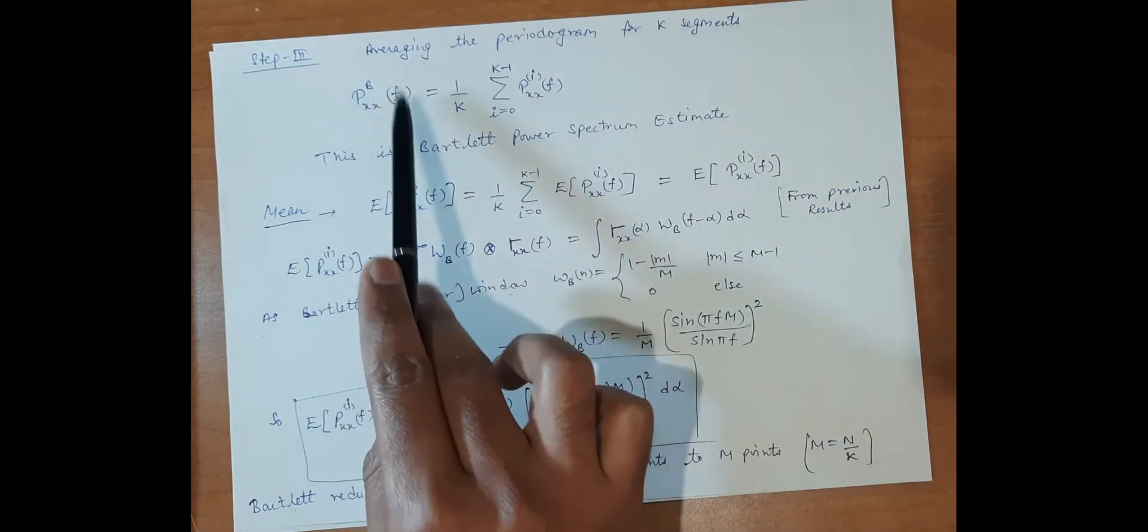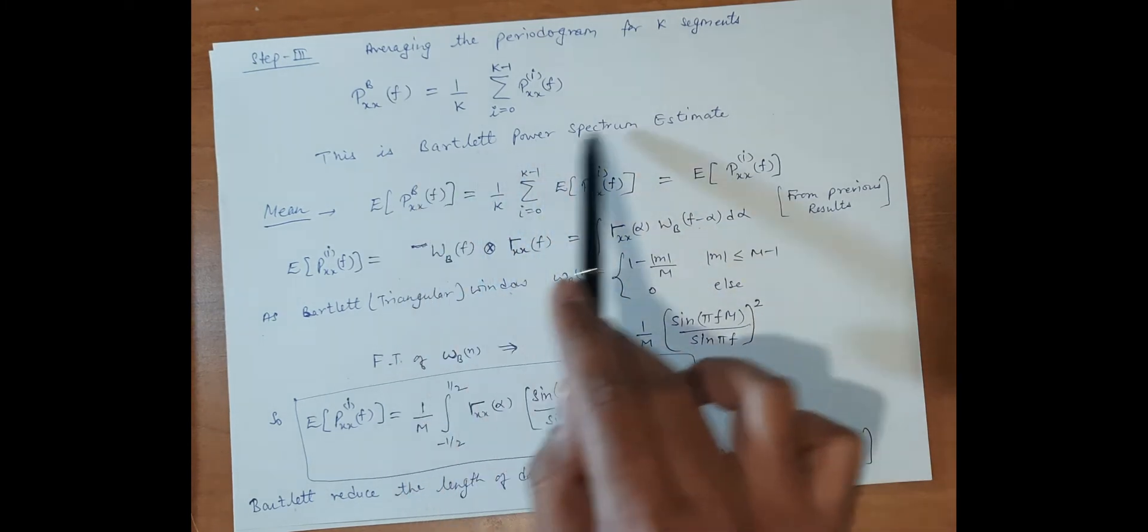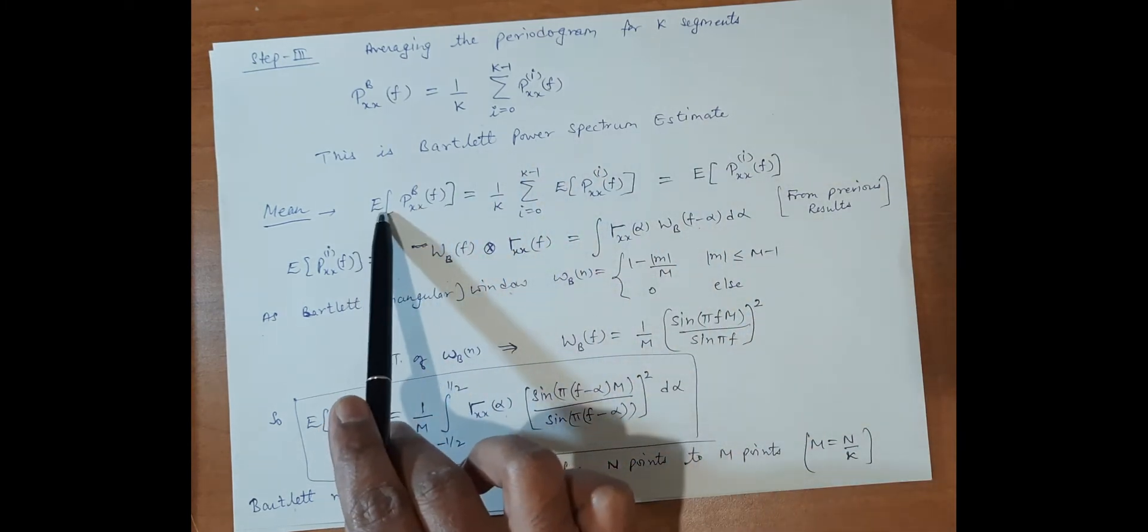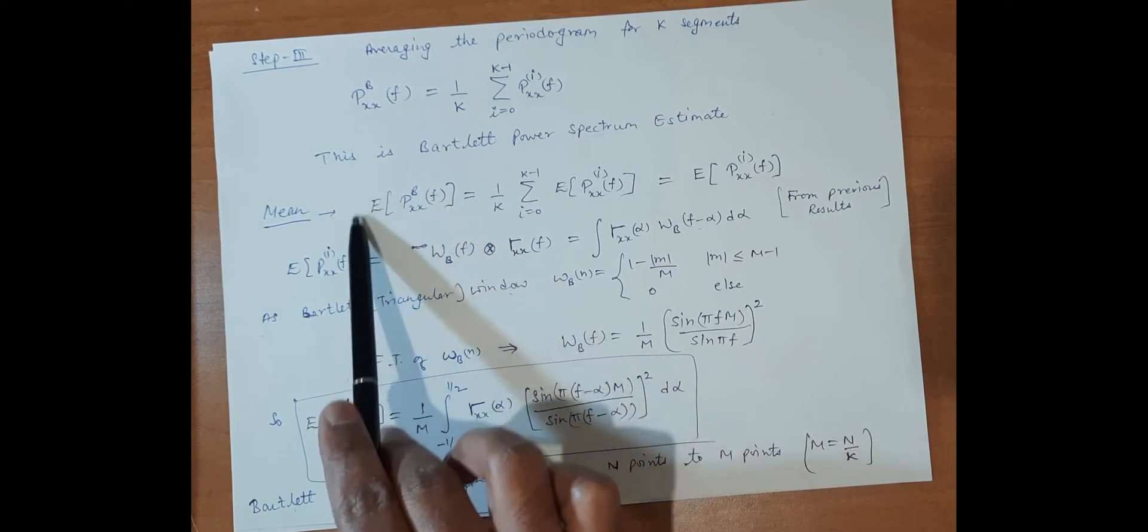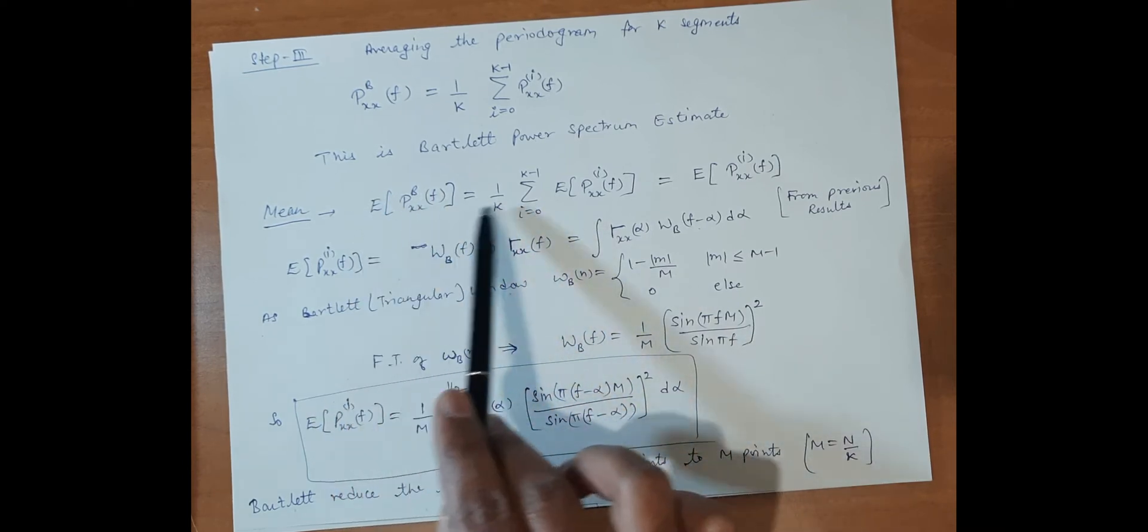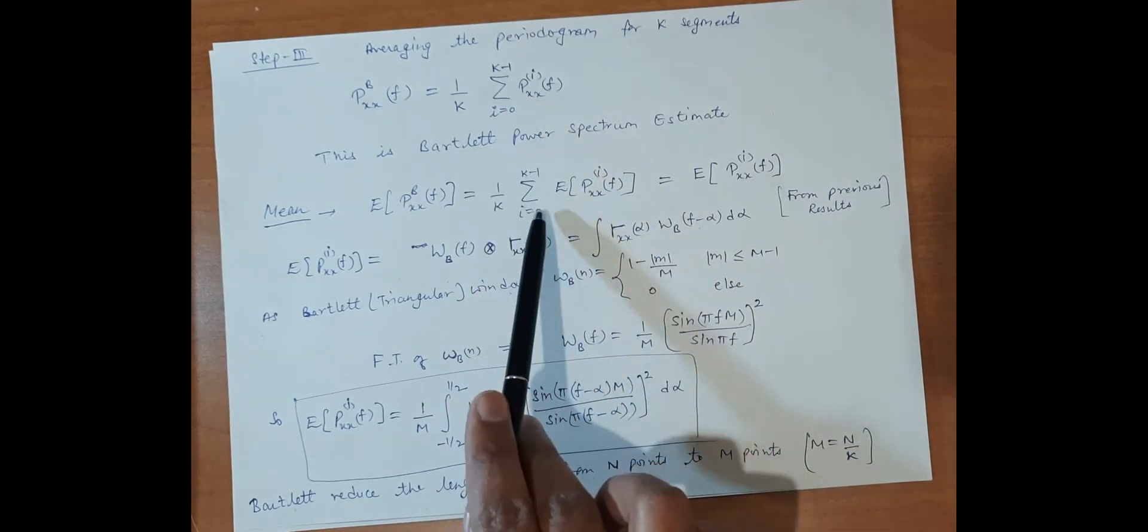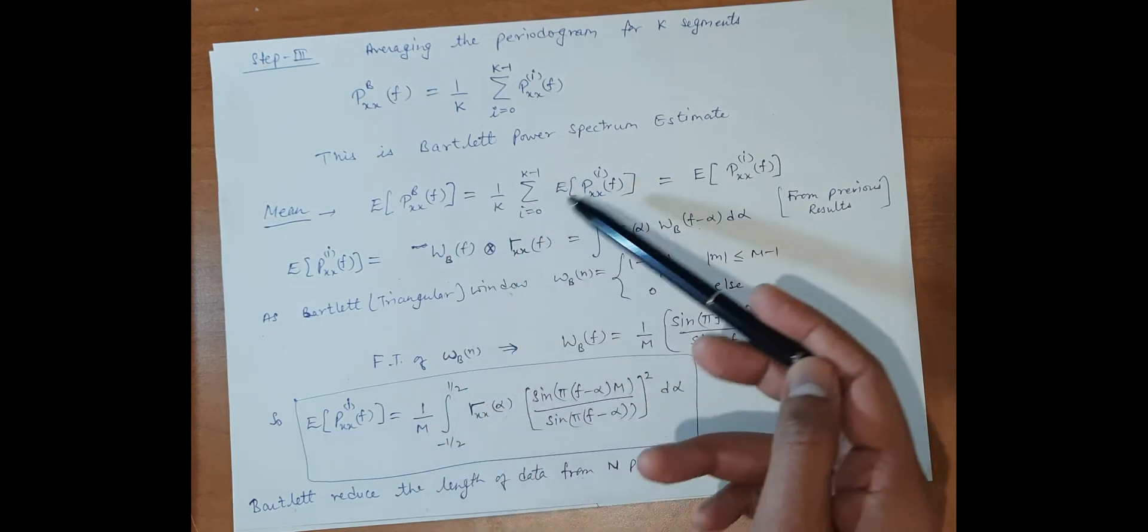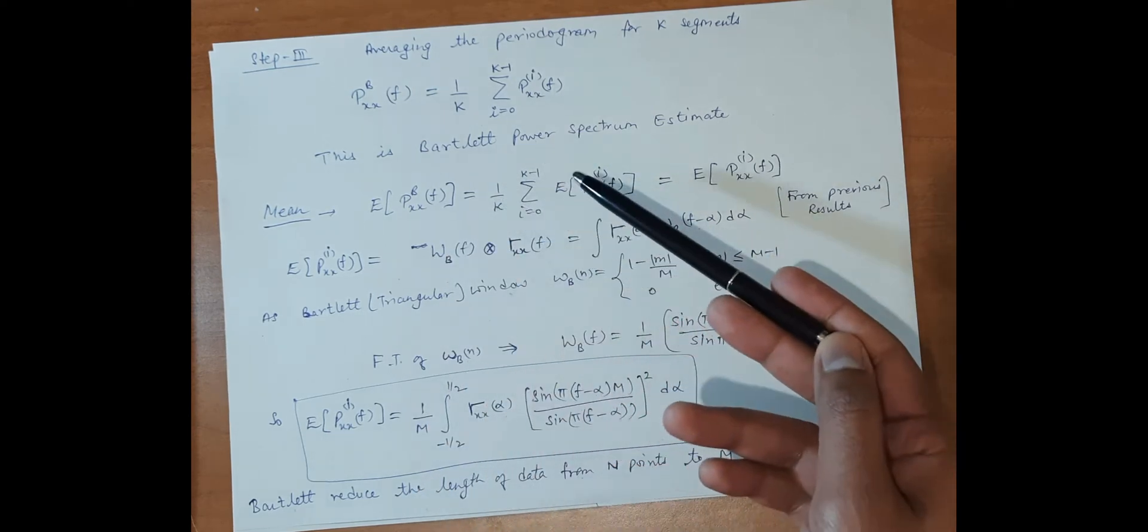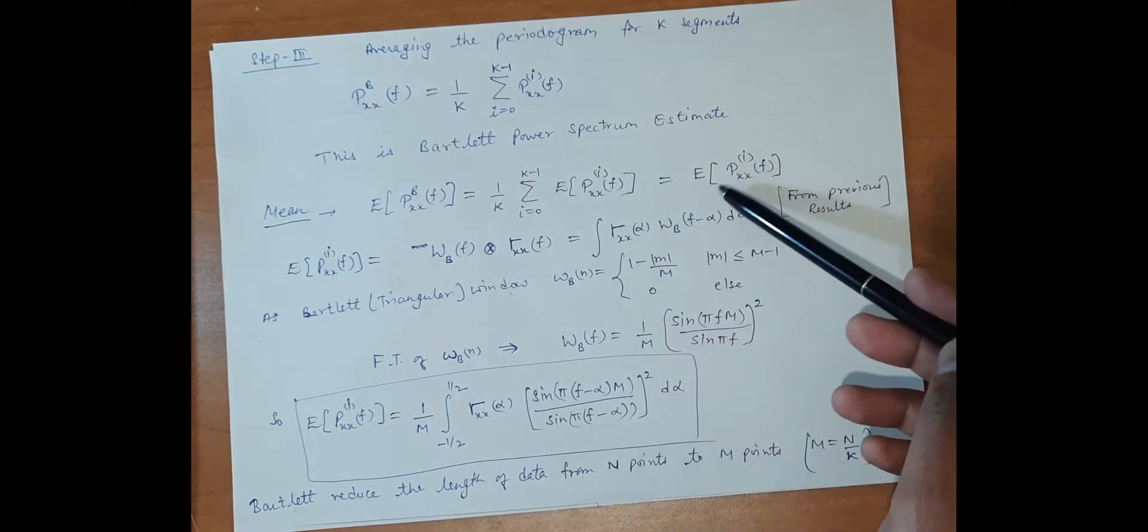Finding the mean of this Bartlett spectrum: the mean is the average value, the expectation E[P_xx^B(f)], the statistical average. We have already done the average, so in that average we can go inside. The average of an average is the same, so we use the statistical average only.